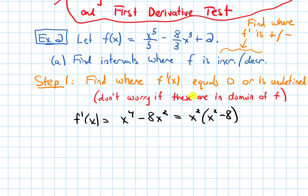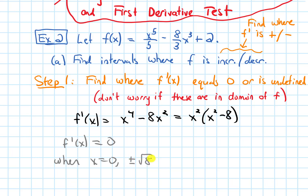Now it's fully factored. The derivative is 0 when x is 0 (from the first factor), and also when x squared minus 8 equals 0, which gives x equals positive or negative root 8. I also need to write down when this is undefined, but this is a polynomial, so our derivative is never undefined.